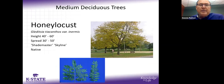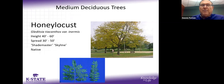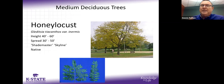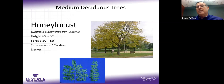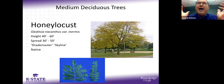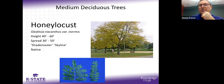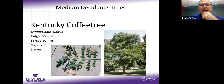Honey locust is one of our native trees, and what we find in trade are thornless varieties. We also try to get fruitless varieties so we don't have the big pods. The compound leaves have tiny leaflets about the size of a pinky nail — they almost disappear, so you don't have heavy leaf litter. You still get a butter-yellow fall color. The canopy is open enough that growing grass underneath is not a problem, unlike denser trees.